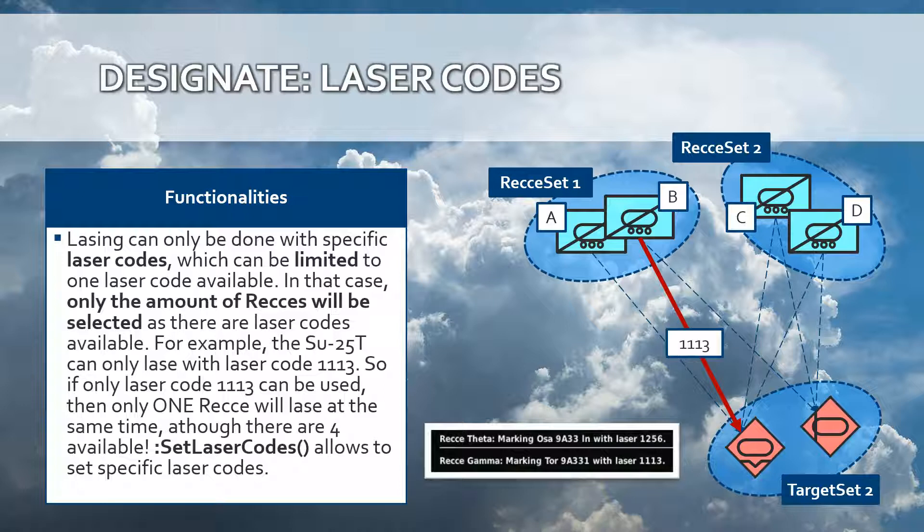Laser codes. Lasing is done by attaching a laser code to a laser. Laser codes have a specific mechanism to be defined, and certain planes can only use certain laser codes. For example, the SU-25T is only capable of using laser code 1113. So it is important that the mission designer is able to define certain laser codes for certain planes or vehicles. The method SetLaserCodes allows you to specify the laser codes that are possible to be used. This is important when you have multiple designation objects designating different target sets with different reconnaissance vehicles.